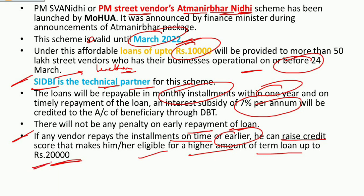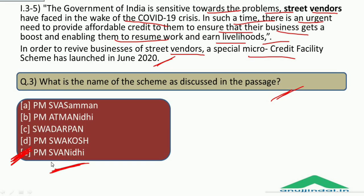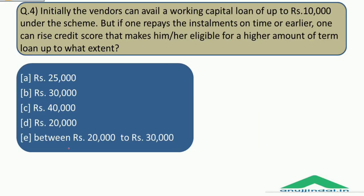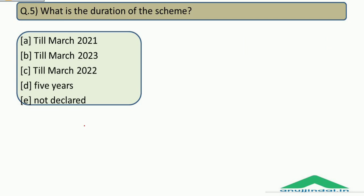The correct answer to the loan amount question is option E — Rs. 10,000 under the scheme. If a vendor repays installments on time or earlier, they can raise their credit score to become eligible for a higher term loan up to Rs. 20,000. The duration of the scheme is valid until March 2022.